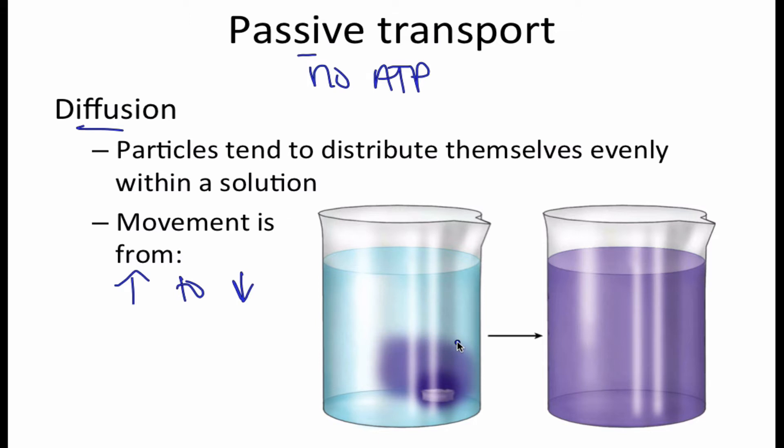If we were to drop a tablet of dye into a glass of water, it would move from area of high concentration eventually to area of low concentration. So it will evenly distribute itself throughout the material. Sometimes diffusion is said to go with the concentration gradient, or it moves down a concentration gradient.